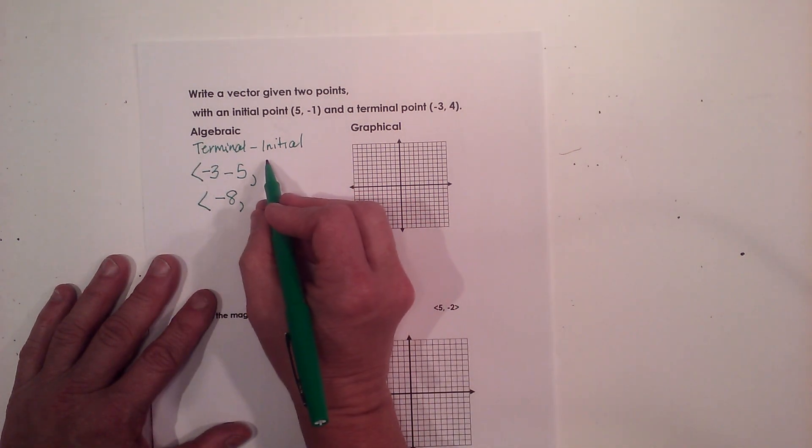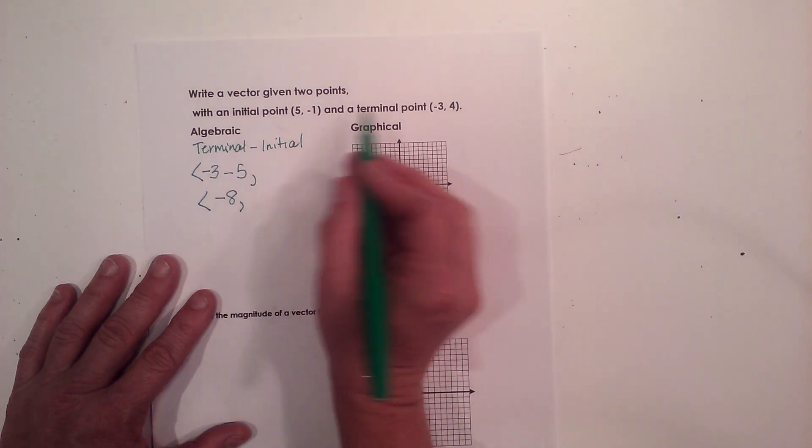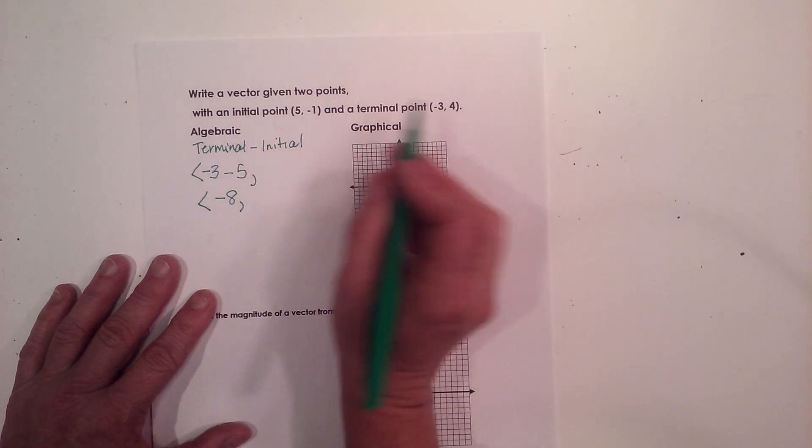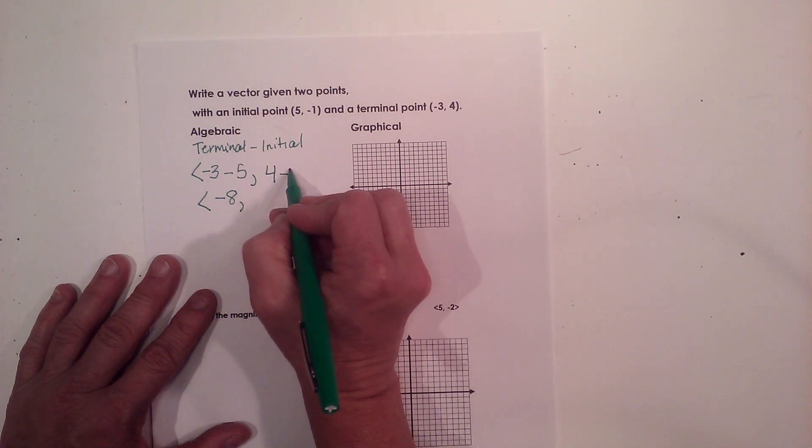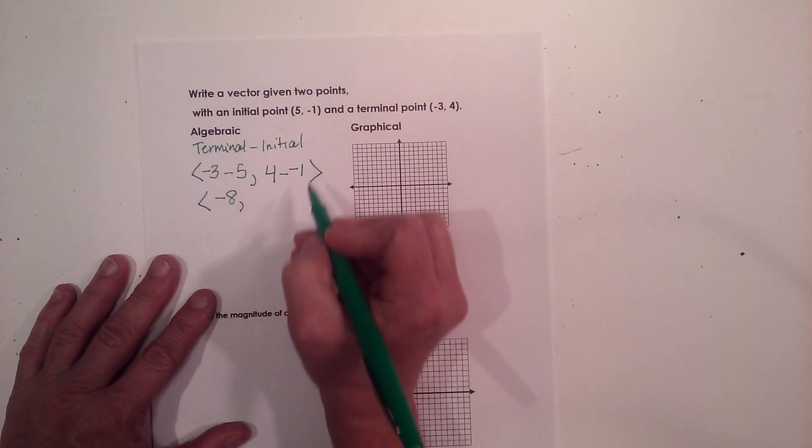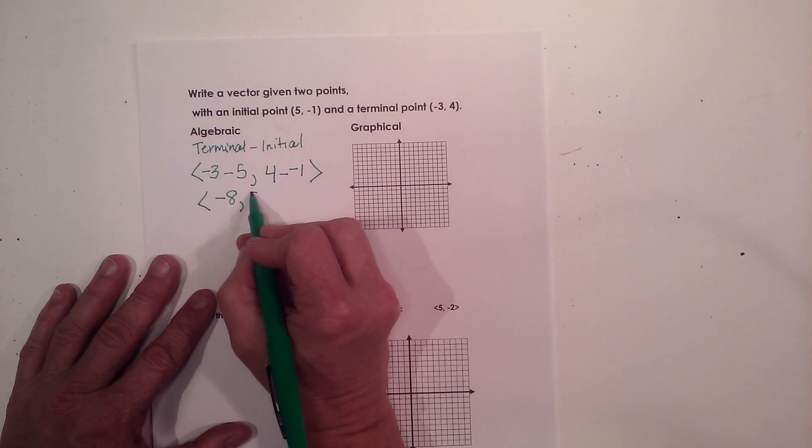Now I'm going to do the same thing for my vertical change. I'm going to take my terminal minus my initial, so 4 minus a negative 1, and that gives me positive 5.